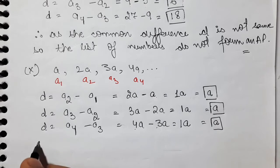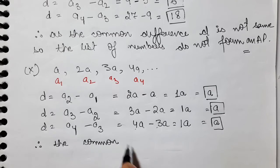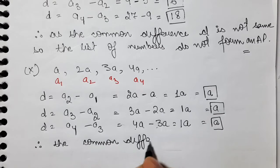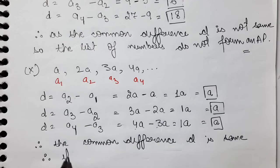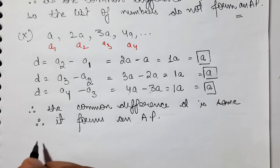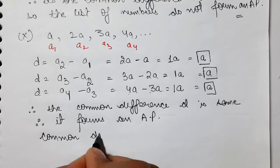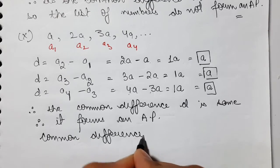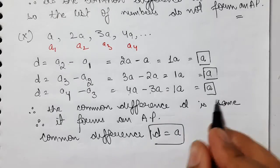Therefore, this forms an AP. The common difference D is the same. Therefore, the list of numbers forms an AP. Since it becomes an AP, we write the common difference D, which is A.